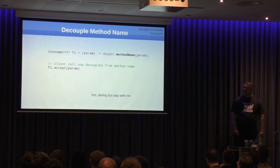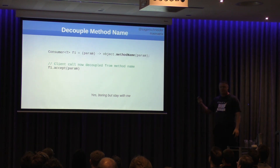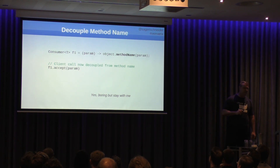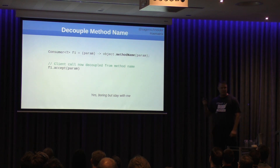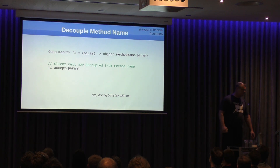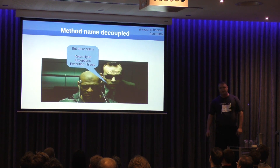So let's start unplugging you from the OO Matrix. The first thing: let's get rid of the name. We just use a lambda — an unnamed function. I can change the name of that method and all my callers just don't need to know the name. We can just change it under the hood. That's pretty cool — we've got rid of one of the problems, though there's still coupling there.